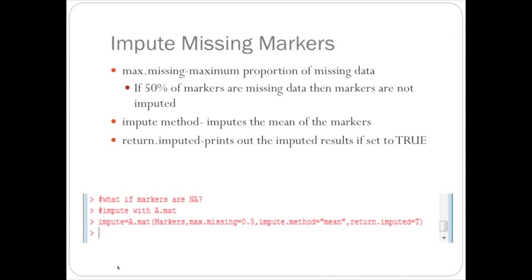For the impute code, the first parameter is the markers matrix that needs to be imputed. The max.missing is set to 0.5, which is the maximum proportion of missing data allowed. If more than 50% of the markers are missing data, then the markers are not imputed and should be removed. This is good quality control since you're removing markers that most likely don't genotype correctly and aren't helpful to the analysis.